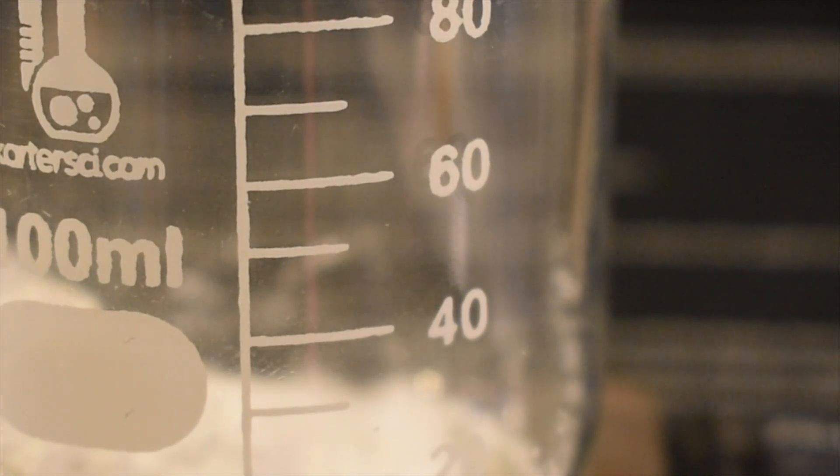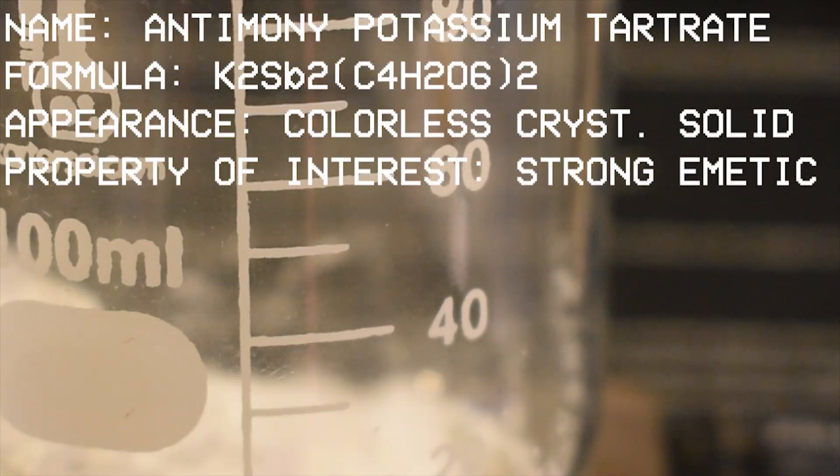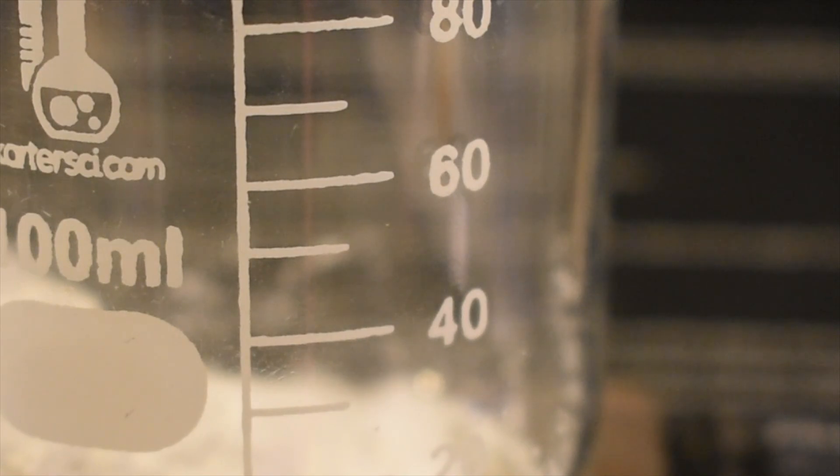Hey everyone, today I'm going to show you how to make a compound called antimony potassium tartrate. Antimony potassium tartrate is formed by the reaction of potassium bitartrate with antimony trioxide.